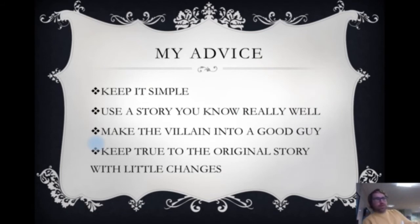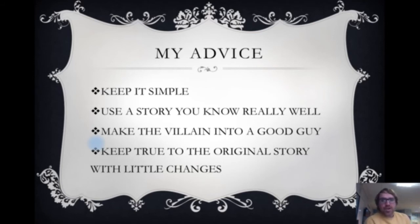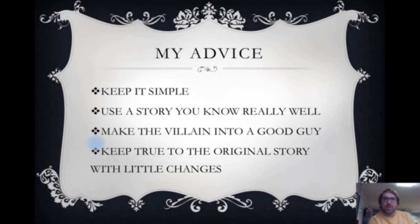When you're thinking about planning your story today, I've got a little bit of advice. My big thing is keep it simple, otherwise your story is going to be really hard to write next week. Use a story you know really well — if you don't know the story very well, you're going to find it very hard to write. I think making the villain into a good guy is probably the simplest way of doing it, unless you want to write something like Cinderella from the perspective of her glass slipper. Keep true to the original story with only little changes, because then the story map will almost fill in itself. You just need to follow the normal story, but write it from the perspective of the character or thing that you've chosen.